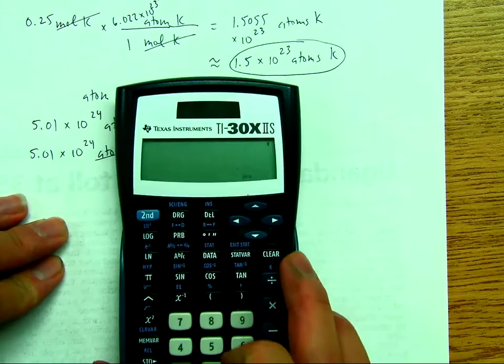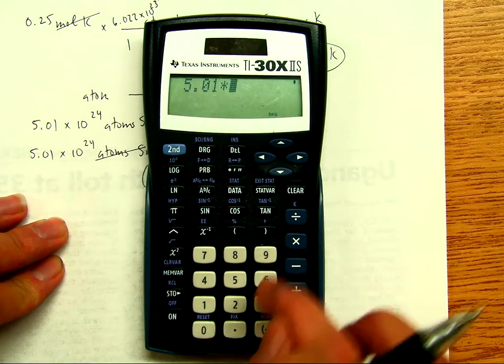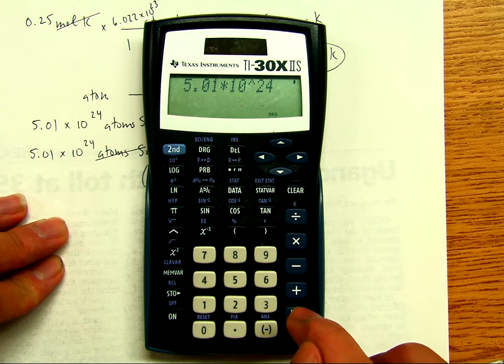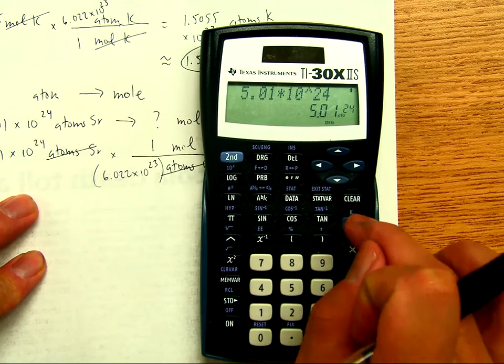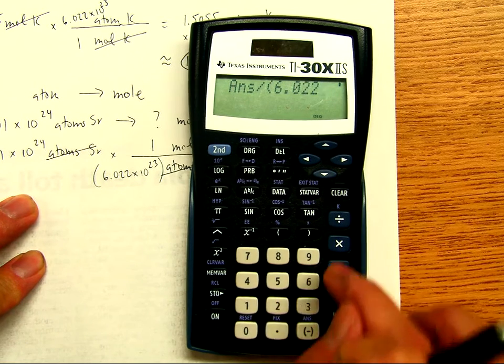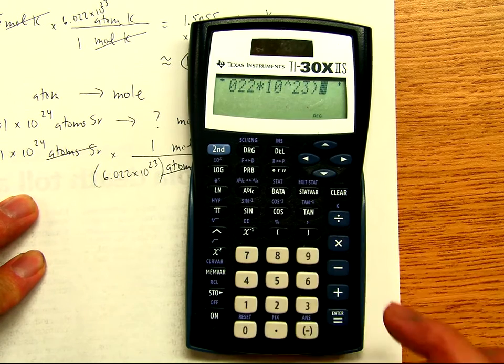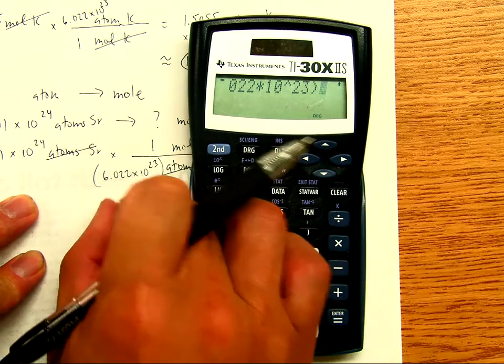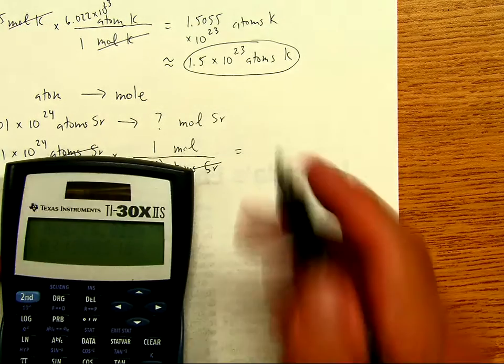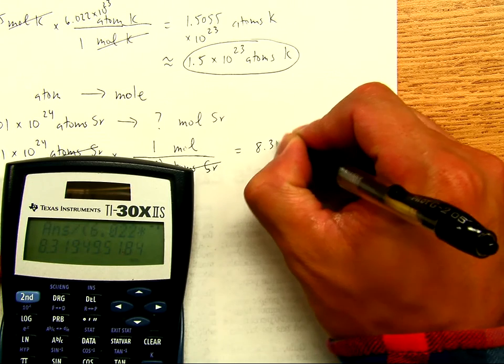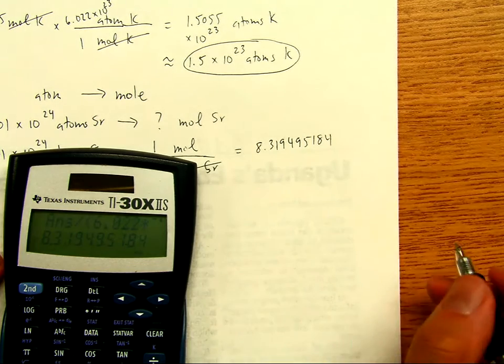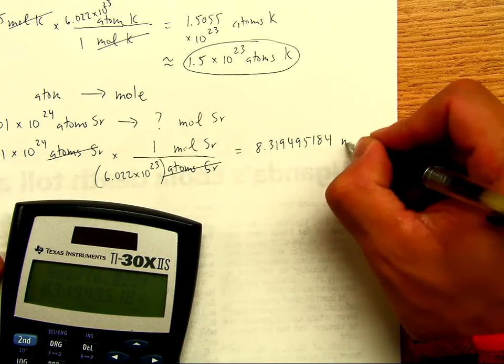So we've got 5.01 times 10 to the power of 24, and I like to hit enter here. Then when you hit divide, use the parenthesis, 6.022 times 10 to the power of 23, close it, so that the calculator knows that you're trying to group this at the bottom to divide. Then hit enter. So the raw answer is 8.319495184 mole of strontium.